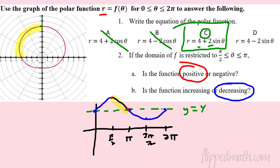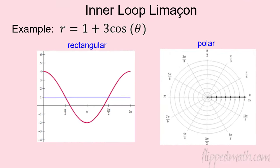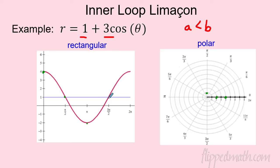When a is less than b, we get an inner loop limaçon. For example, 1 + 3cos(θ): the rectangular graph goes negative. Key points: at 0, r = 4; at π/2, r = 1; at π, r = −2 (negative, so we go in the opposite direction); at 3π/2, r = 1; back to 4. What will this look like in polar? Let's check GeoGebra.